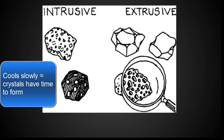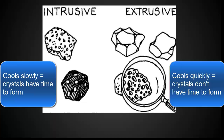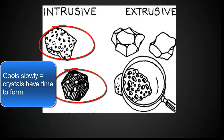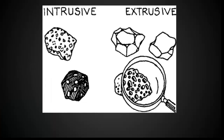Intrusive and extrusive rocks actually look different. When igneous rocks are extrusive, they cool really quickly, and so they have very little crystals or no crystals at all — if you can't see the crystals, you know it's extrusive. Intrusive rocks cool slowly, and so we start to see really big crystals inside the rock. Oftentimes you'll also see lots of different colors, because different minerals cool at different rates, causing different crystals and colors to appear.